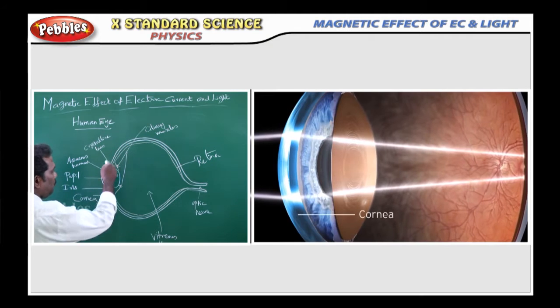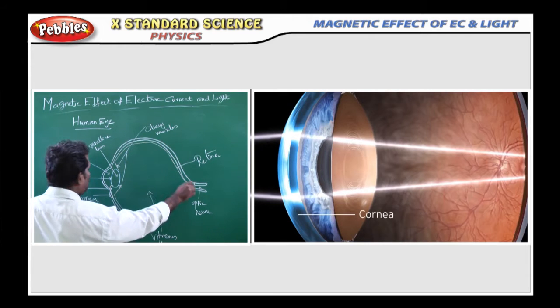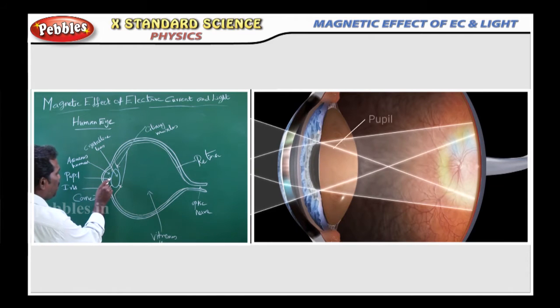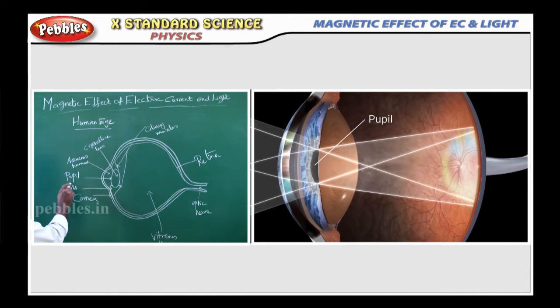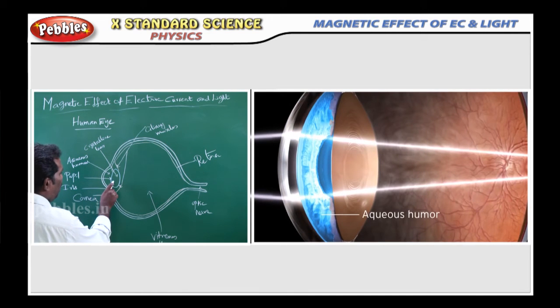The outer layer of the human eye is the cornea. Then next, the light entering region - this region is called the pupil. Then between the cornea and the lens, the aqueous humor is present.